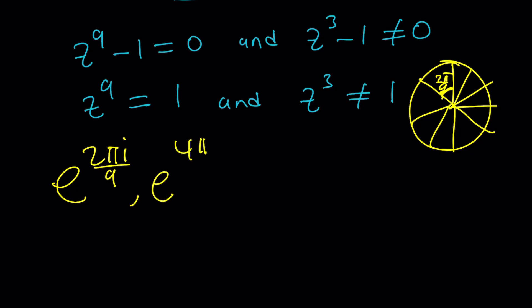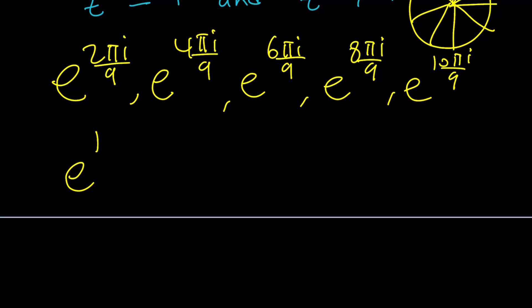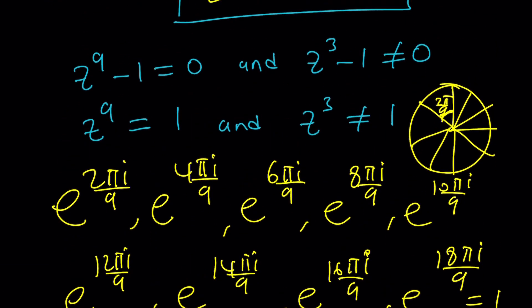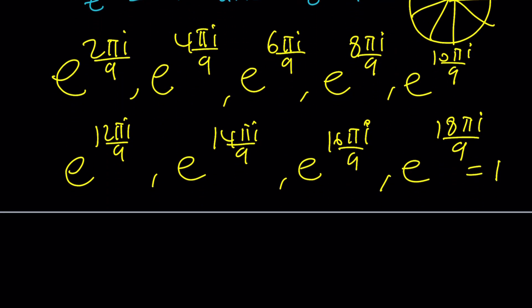So this next one is going to be e to the power four pi i over nine, and then e to the power six pi over nine. In other words, pi i over nine with an even number coefficient, e to the eight pi i over nine, and then e to the 10 pi i over nine, and there's more. e to the power 12 pi i over nine, e to the power 14 pi i over nine, and e to the power 16 pi i over nine. If you write e to the power 18 pi i over nine, guess what that gives you? That gives you two pi, and that is actually one, and definitely you don't want that, because if it's one, then its cube is also going to be one, and that's not going to work. You don't want that. Obviously, that doesn't satisfy the original equation anyways.